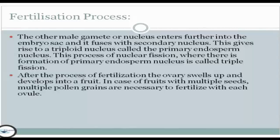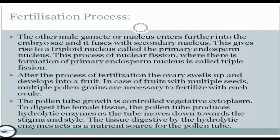After the process of fertilization, the ovary swells up and develops into a fruit. In the case of fruits with multiple seeds, multiple pollen grains are necessary to fertilize each ovule. The pollen tube growth is controlled by vegetative cytoplasm to digest the female tissue. The pollen tube produces hydrolytic enzymes as it moves down towards the stigma and style, and the digested tissue acts as a nutrient source for the pollen tube.